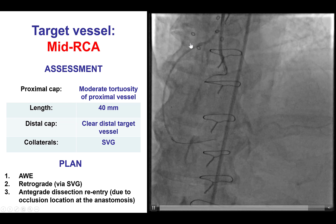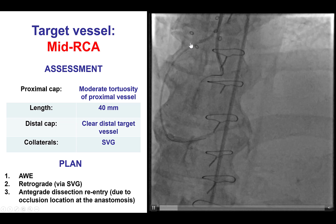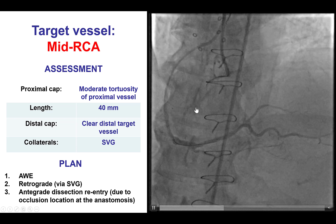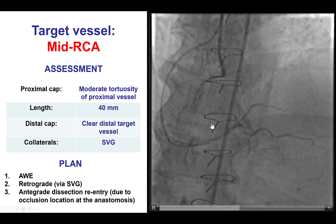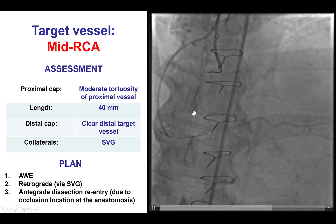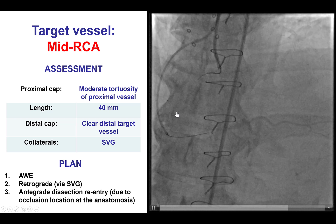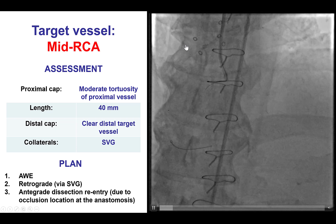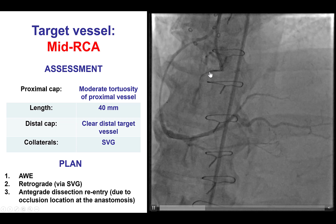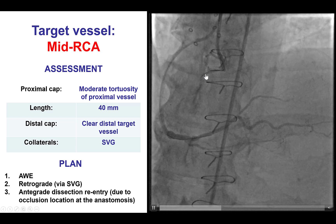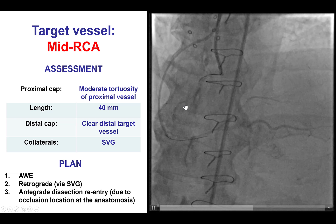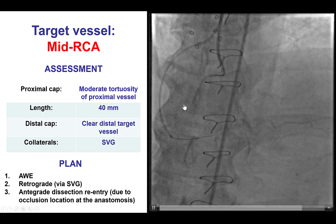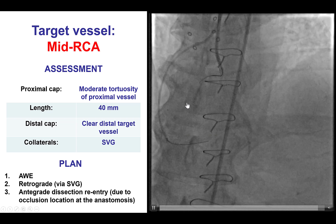A decision was made, after discussing with the patient and the referring physician, to actually attempt to recanalize the native right coronary artery, which would likely provide better long-term outcomes than PCI of the ostial SVG lesion. Having said that, this was a complex CTO. There is a well-defined proximal cap; however, there is heavy calcification and tortuosity.